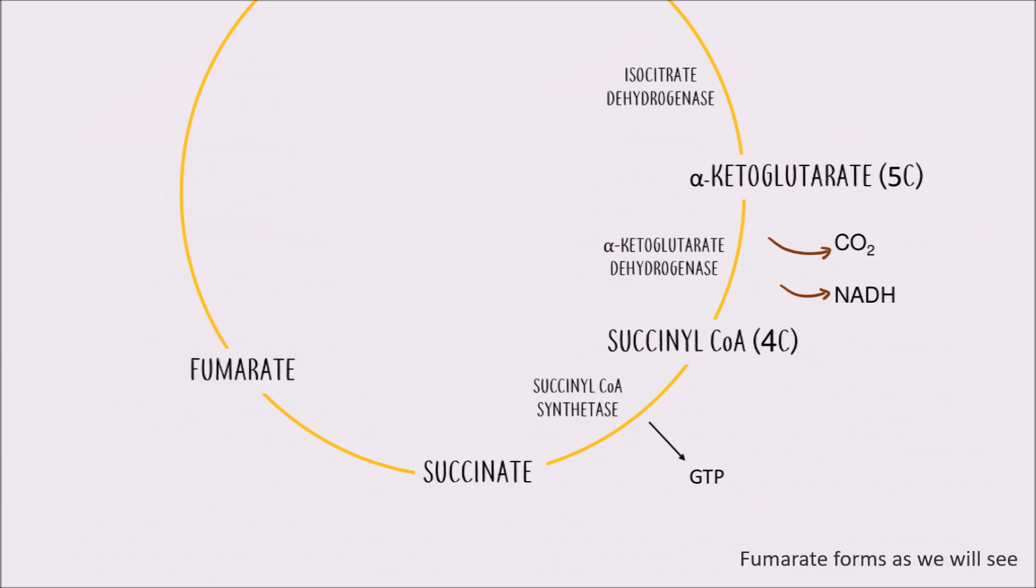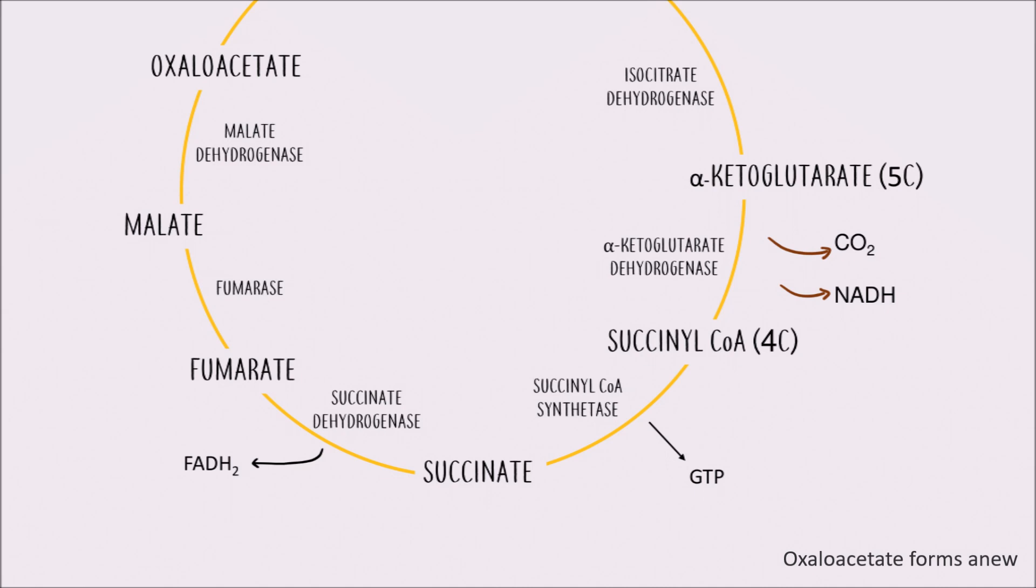Fumarate forms as we will see. Succinate dehydrogenase is key, forming a new FADH2 and passing fumarate on to the next enzyme, fumarase, which forms a malate to degrade. Thanks to malate dehydrogenase, oxaloacetate forms anew.